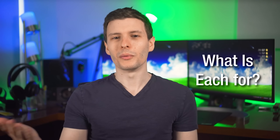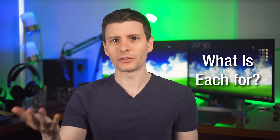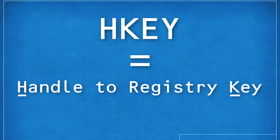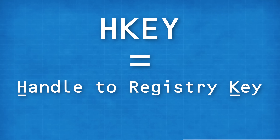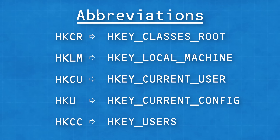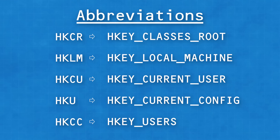So these root keys are not files in themselves — they are basically logical keys that point to a bunch of different stuff that makes up the registry, including these files. You're probably wondering what the purposes of these various root keys are. First, HKEY stands for "handle to registry key." You may have also seen these root keys abbreviated — for example, HKEY_CLASSES_ROOT is often abbreviated as HKCR, and LOCAL_MACHINE is HKLM, and so on.